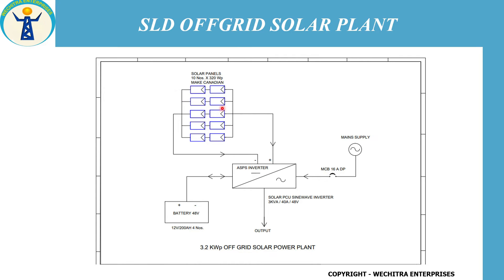In this single line diagram you can see there are two solar panels connected in series, and there are five such sets of series-connected solar panels — so five sets total — which are finally connected in parallel to give a positive and negative DC output to the inverter. This assembly of series and parallel connection of solar panels is calculated based on the specifications of the off-grid inverter.